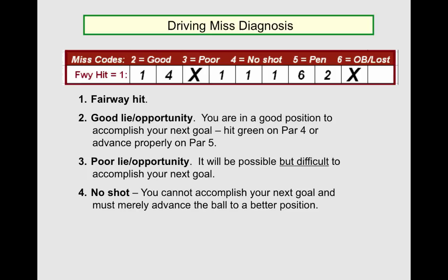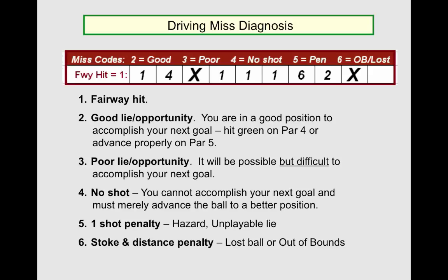4 is no shot — your drive has left you behind a tree, under a bush. You cannot proceed normally; it requires some sort of advancement to get back to normal play. 5 is a penalty result: a hazard or an unplayable lie. And 6, the worst of all, is the stroke and distance penalty — lost ball or out of bounds. Finally, note that we X out the par 3s, as there are no drives on par 3 holes.